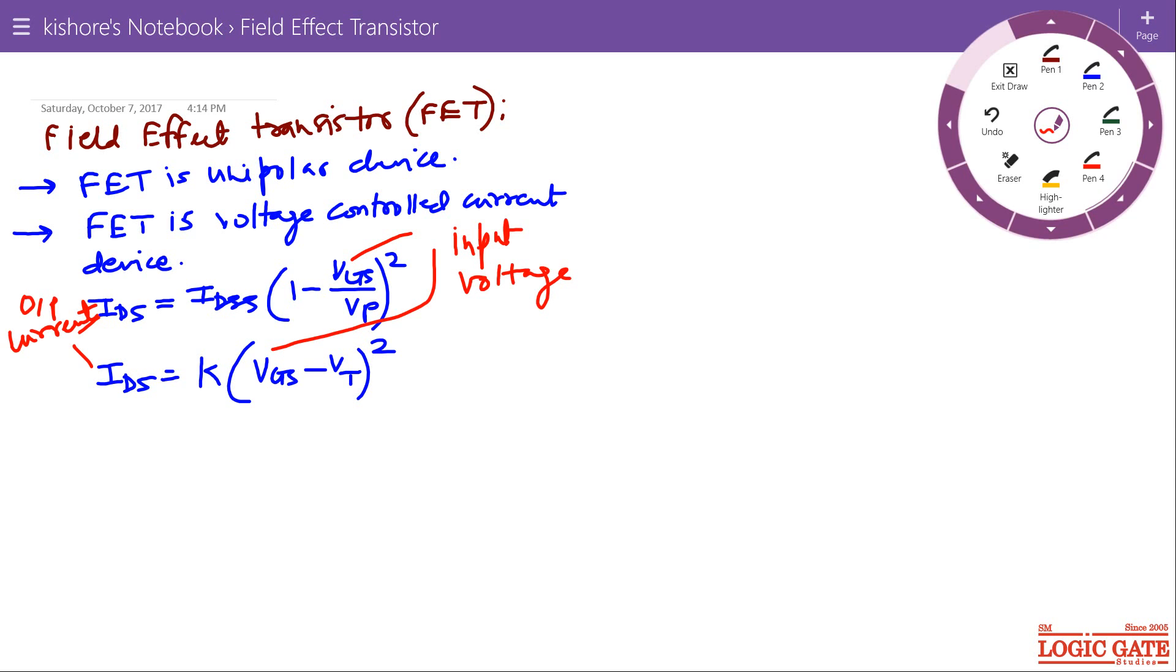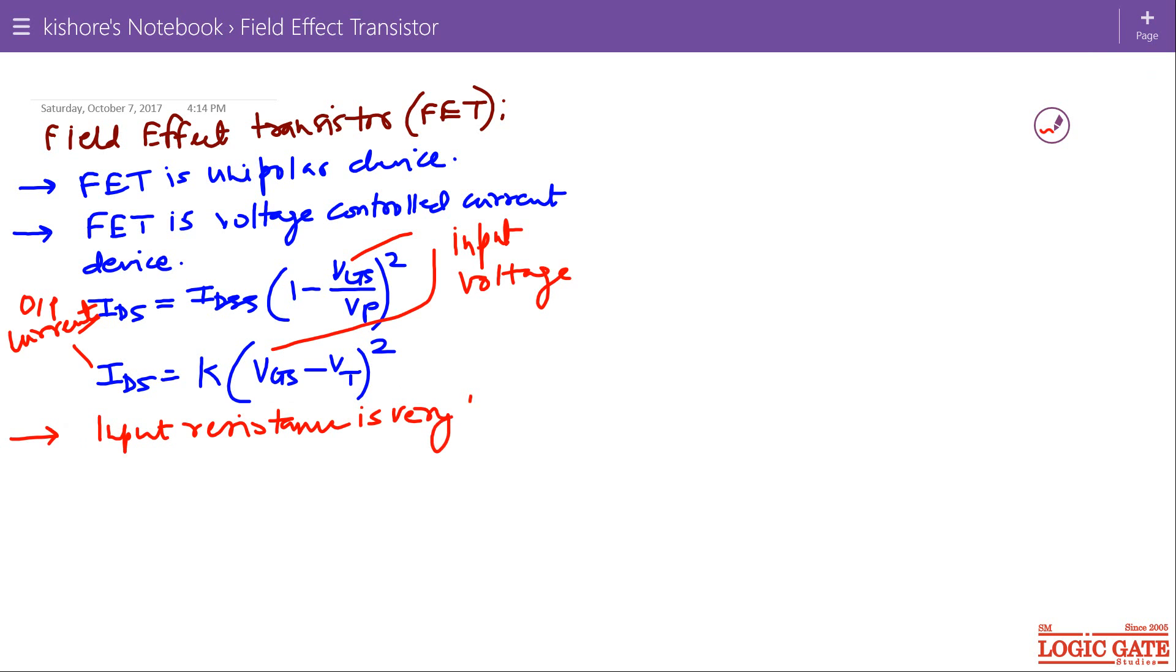The input resistance of FET is very large or most of the time we take input resistance of FET as infinite. And because of this high input resistance, as an amplifier FET is preferred over BJT.